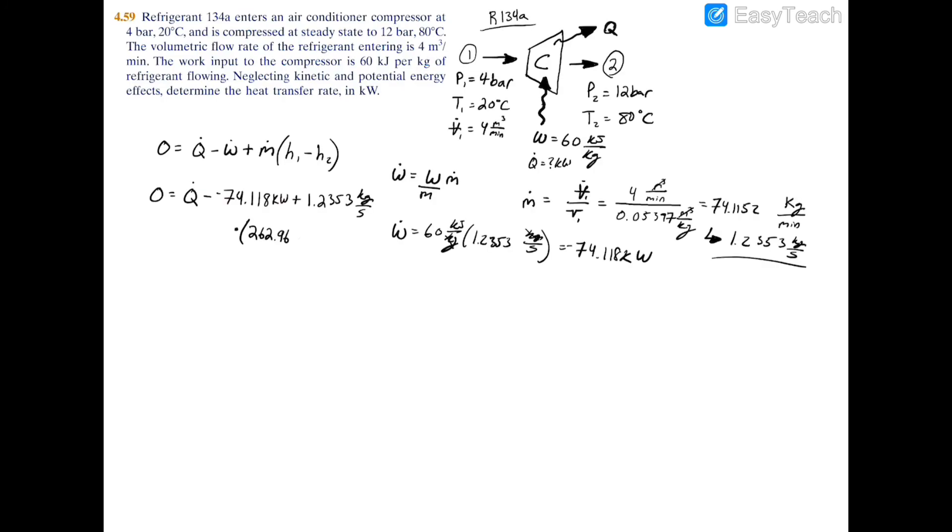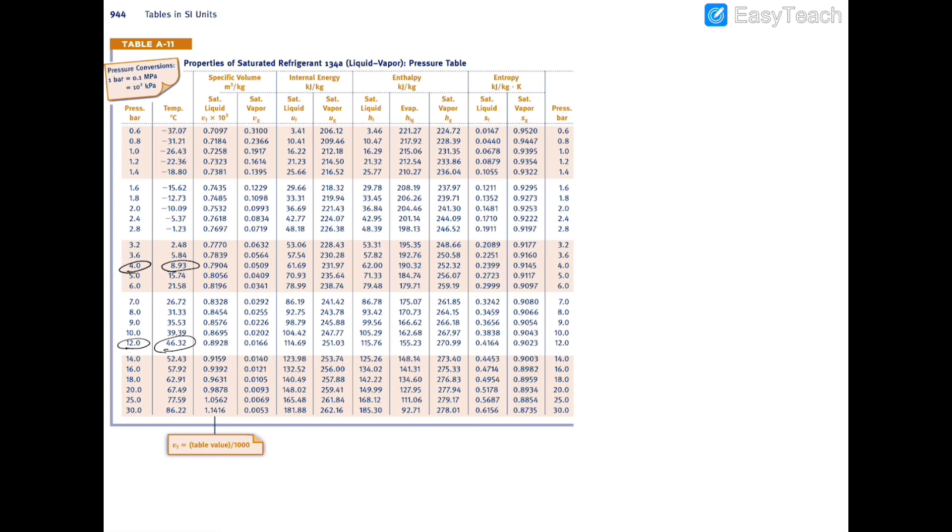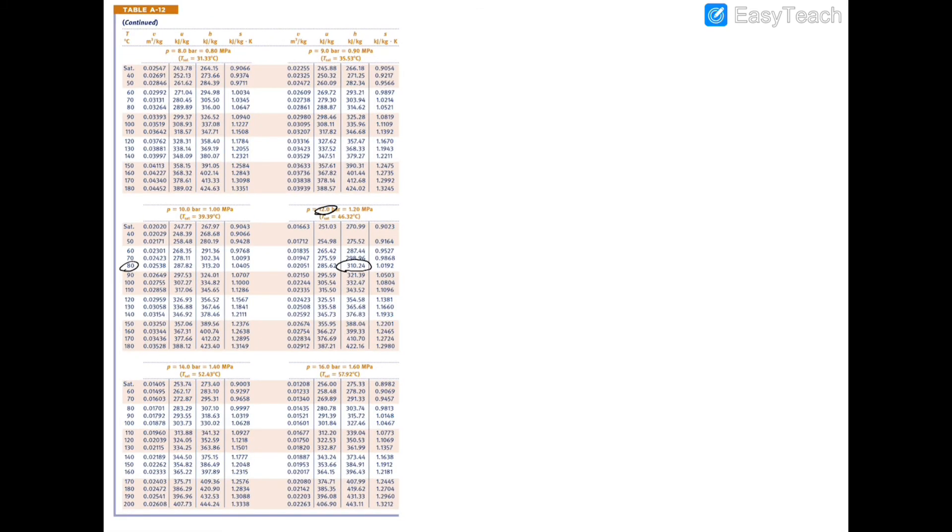And then we need to subtract h2. So at 2 we have 12 bar and 80C. So if we go to the saturated table at 12 bar, we have 46C and we're at 80C in the problem statement, so we have to turn over to table A-12. And at 12 bar and 80C, we have 310.24 kilojoules per kilogram.